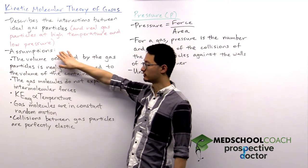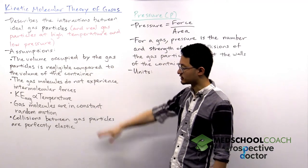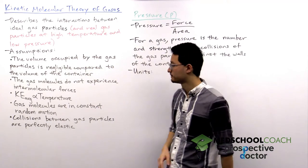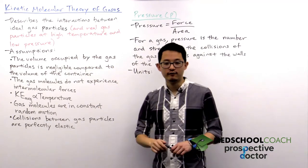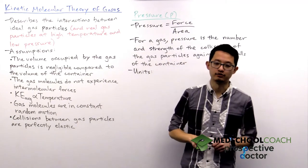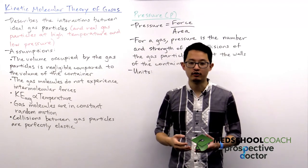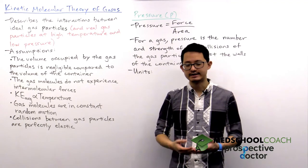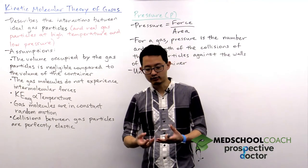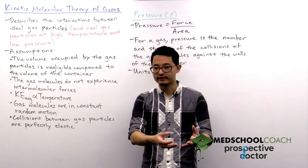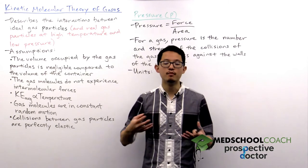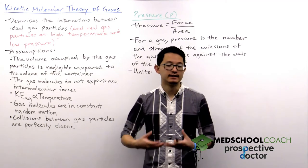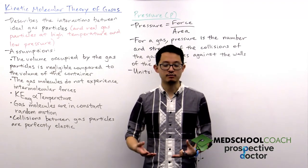So now let's take a look at what are the assumptions that we make with describing the interactions between ideal gas particles. You should know these different assumptions for the MCAT. The first is that the volume occupied by the gas particles is negligible compared to the volume of the container. This is essentially saying that in a container with gases you do have gas molecules, but it's mostly open space. The distance between the gas molecules is very large.